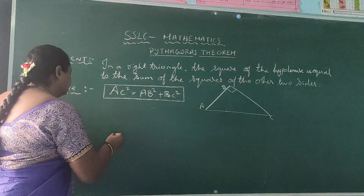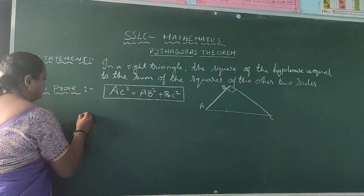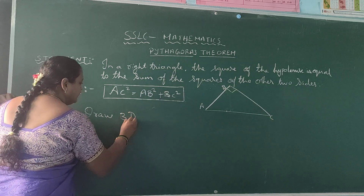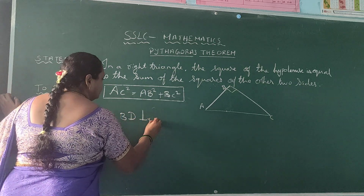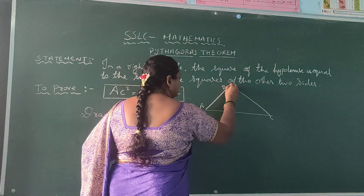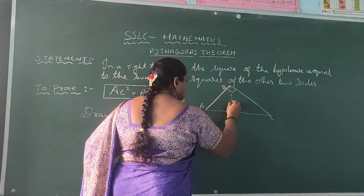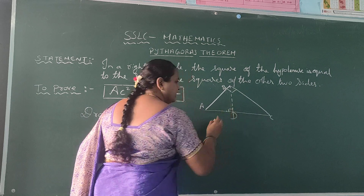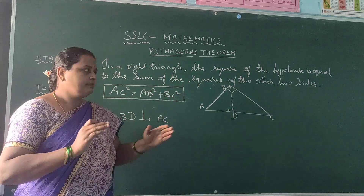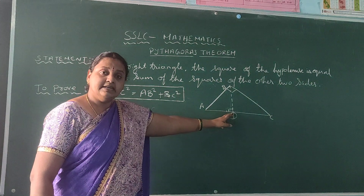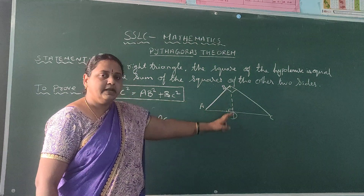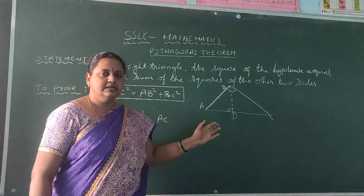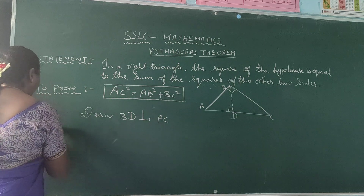For the construction, draw BD perpendicular to AC. That means you are going to draw one perpendicular line from B to AC, meeting at point D. Perpendicular means it always makes an angle of 90 degrees. So from B, draw a perpendicular line BD to AC.